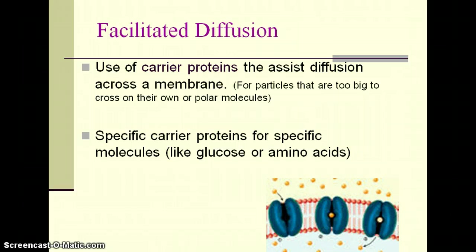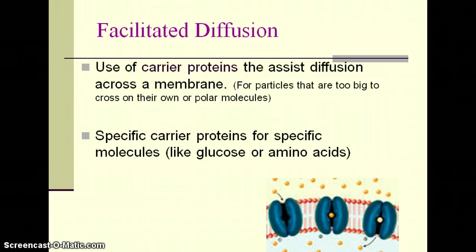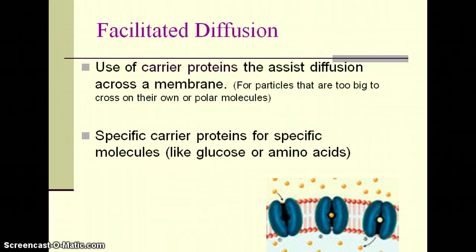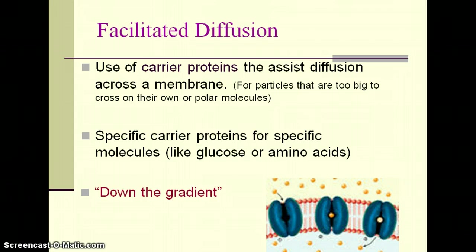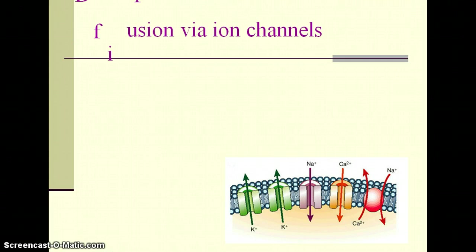There are specific carrier proteins for specific molecules. A glucose molecule will only fit into a carrier protein meant for glucose; an amino acid will only fit in a carrier protein made to carry amino acids. These particles still move down the concentration gradient, going from high to low concentration, and they're still not using energy.